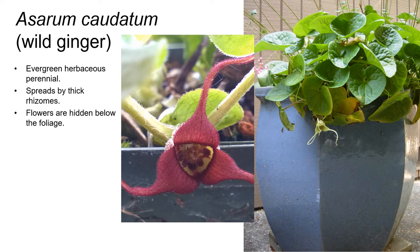Wild ginger has large glabrous leaves that are oriented horizontally in order to expose as much surface area as possible to incoming solar radiation. We have three species of wild ginger in California, all of which are low-growing herbaceous perennials found in forest ecosystems, and you can go to CalScape, CalFlora, and the Jepson eFlora to learn more about each of these three species. The species found in Santa Cruz County is Asarum caudatum, whose specific epithet refers to the cordate or heart-shaped leaves. Wild ginger spreads by thick rhizomes and often forms a really thick carpet of foliage on the floor, often in conjunction with redwood sorrel.